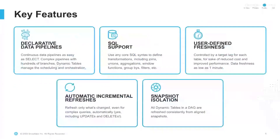What are some key features to highlight under dynamic tables? First, dynamic tables are easy and declarative — you don't have to think about the complexity of transformations at each step. Think about what the output of your pipeline needs to look like and provide that as a select query. You don't have to manage any orchestration or dependencies; all of that is offloaded and managed by dynamic tables for you. Second, we have broad SQL support — you can use any core SQL syntax to define your transformations, including joins, unions, aggregations, window functions, and group bys. Third, user-defined freshness: with the target lag, you can define how fresh you want the data to be and use that as a lever to control your costs. Dial the target lag longer to reduce costs, or dial it down for faster pipelines. It really is that simple.